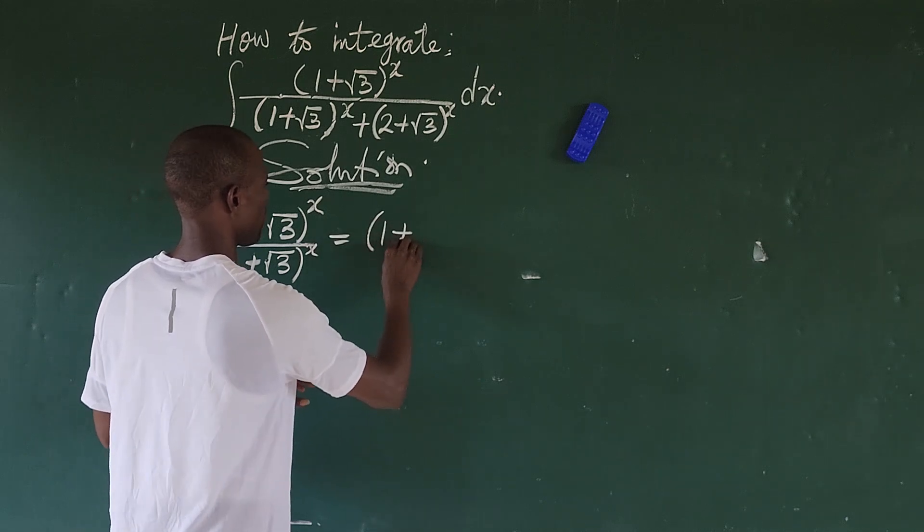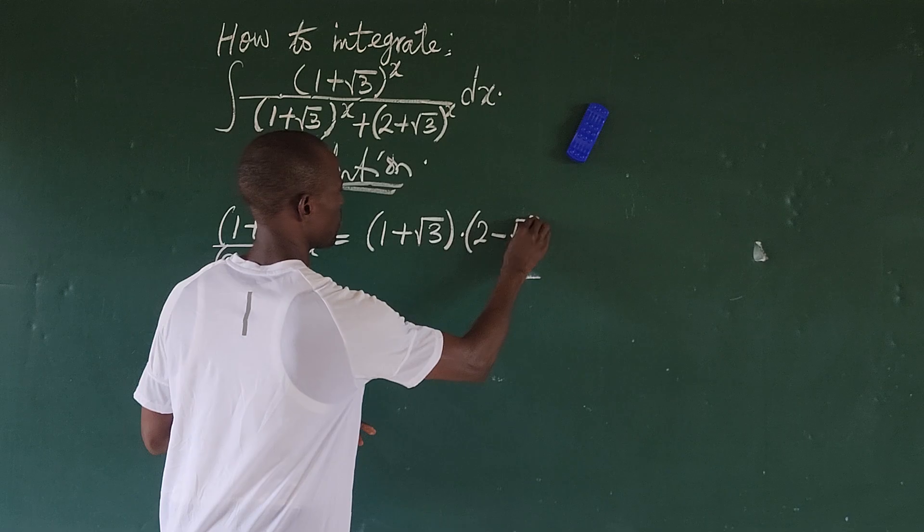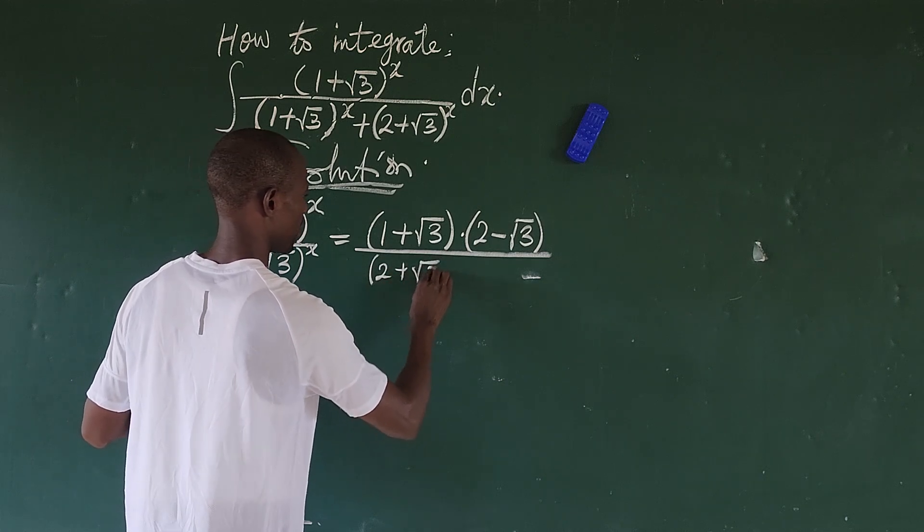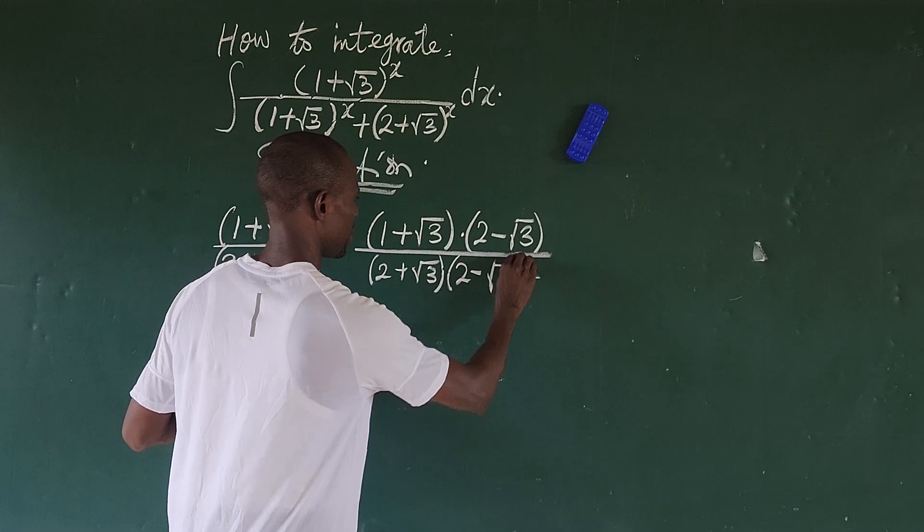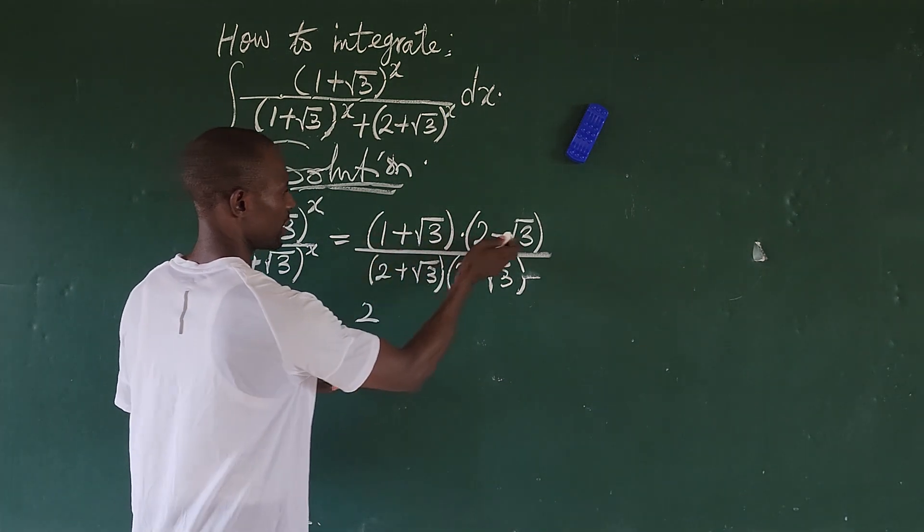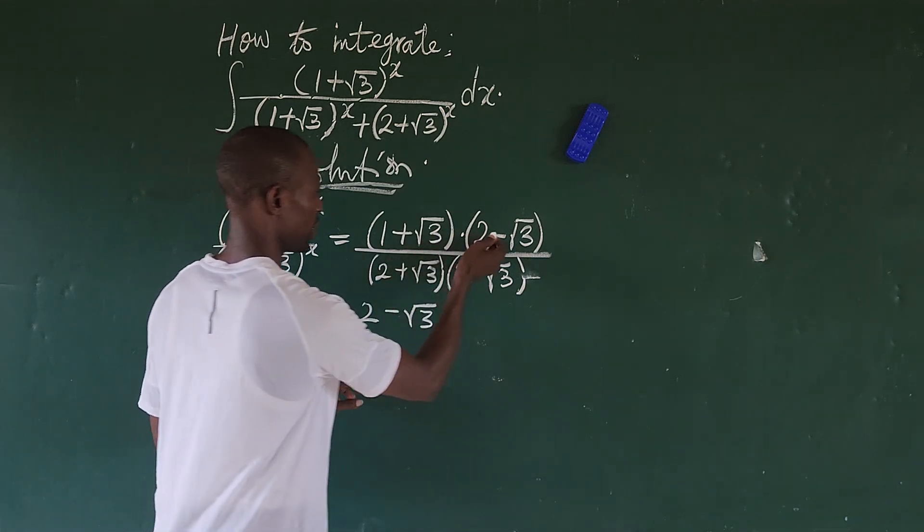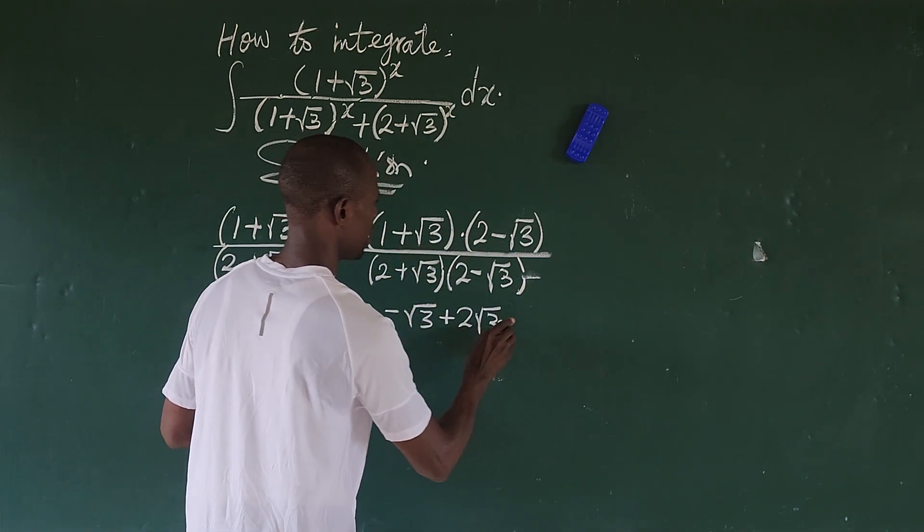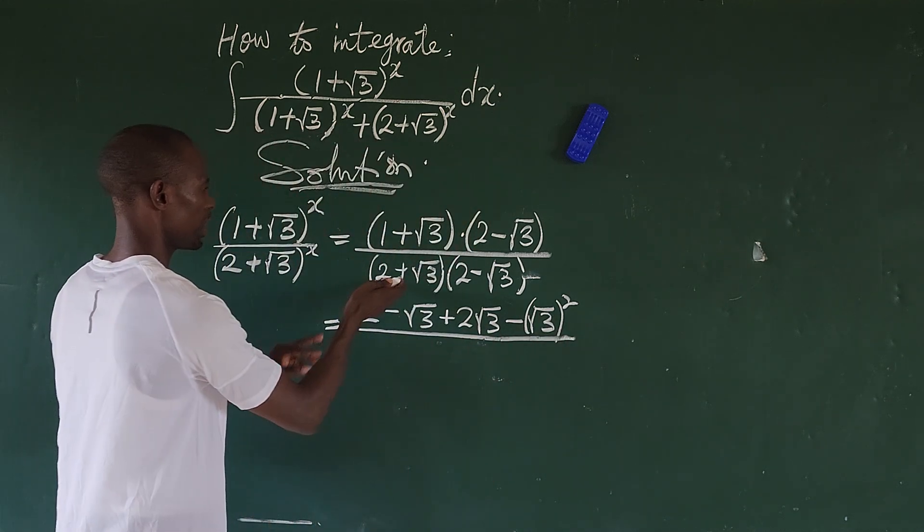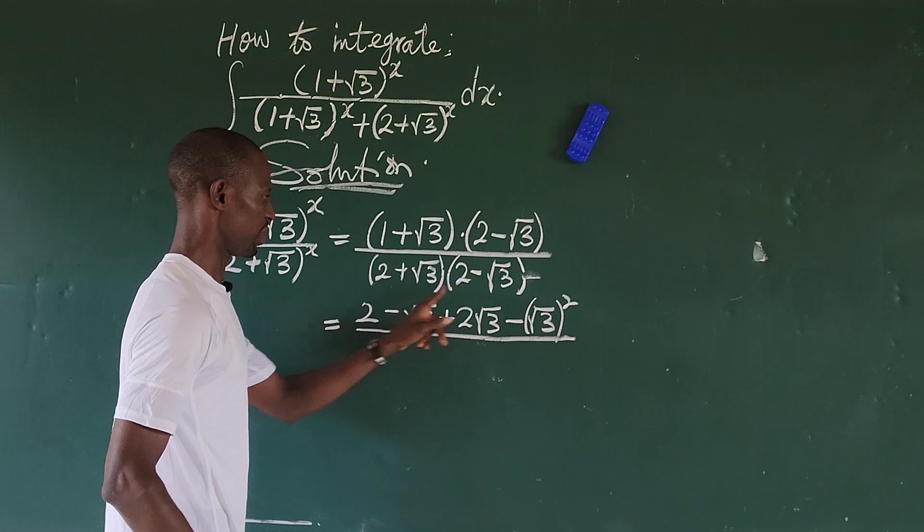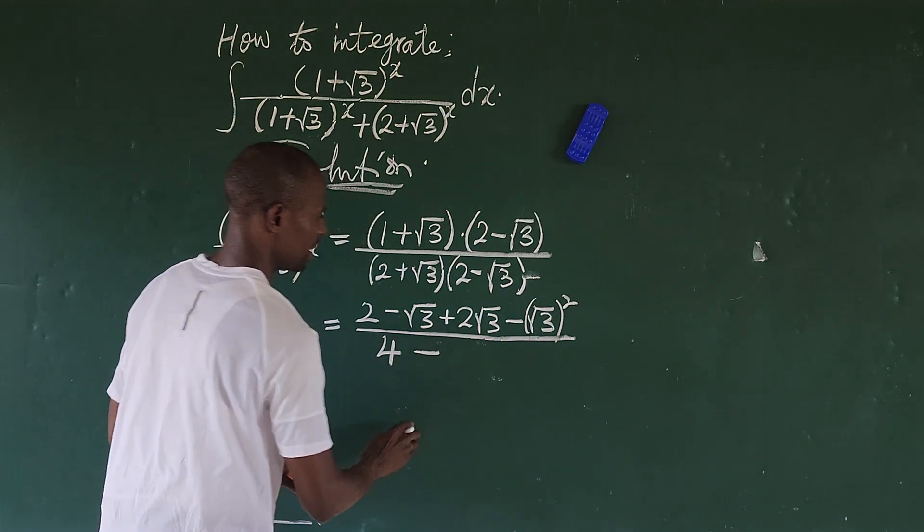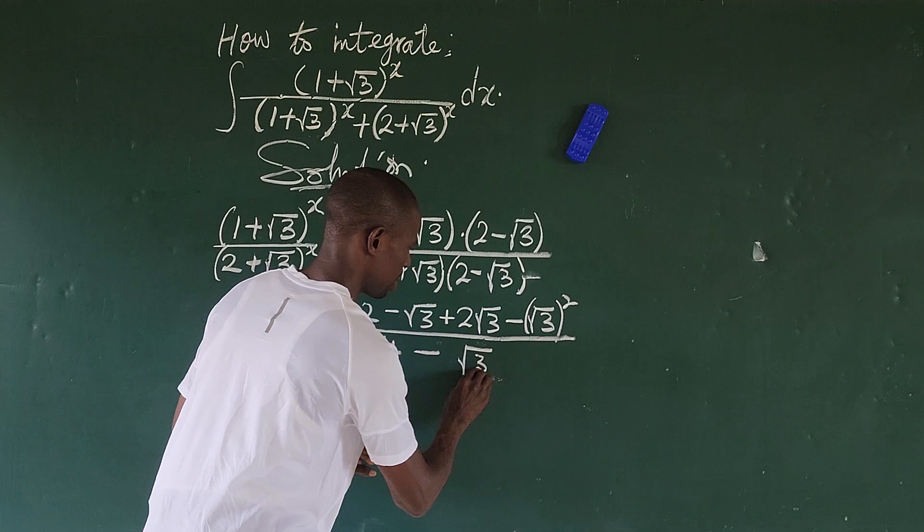So we're going to multiply the numerator here by (2 - √3) all over (2 + √3) by its conjugate. We use this to multiply this. This times this will give us 2, this times this will give us minus square root of 3, we have this times this will give us plus 2√3. Everything here will now be all over, because this is multiplied by its conjugate, we use the first term to times this and use the second term to times this. So 2 times 2 will give us 4, then minus √3 times √3 will give us √3 to the power of 2.